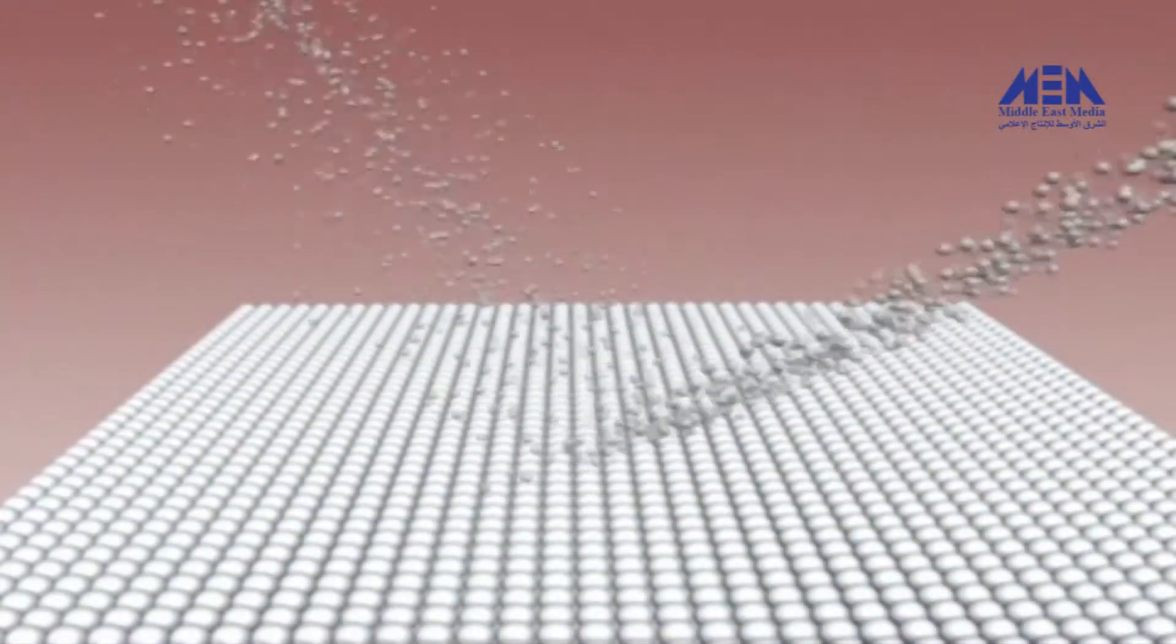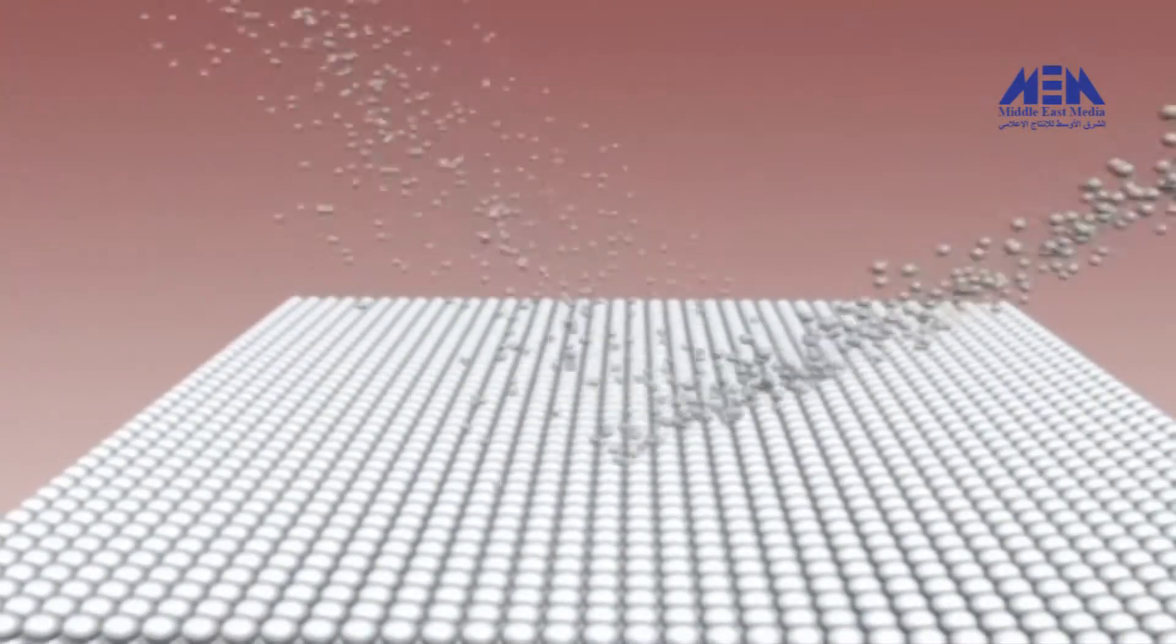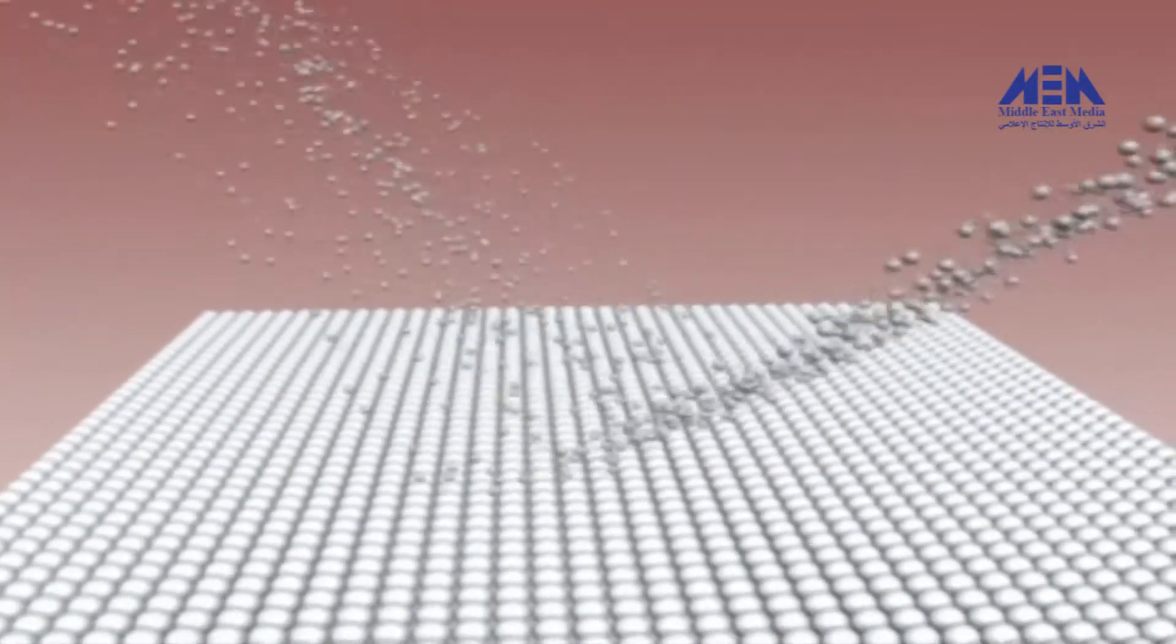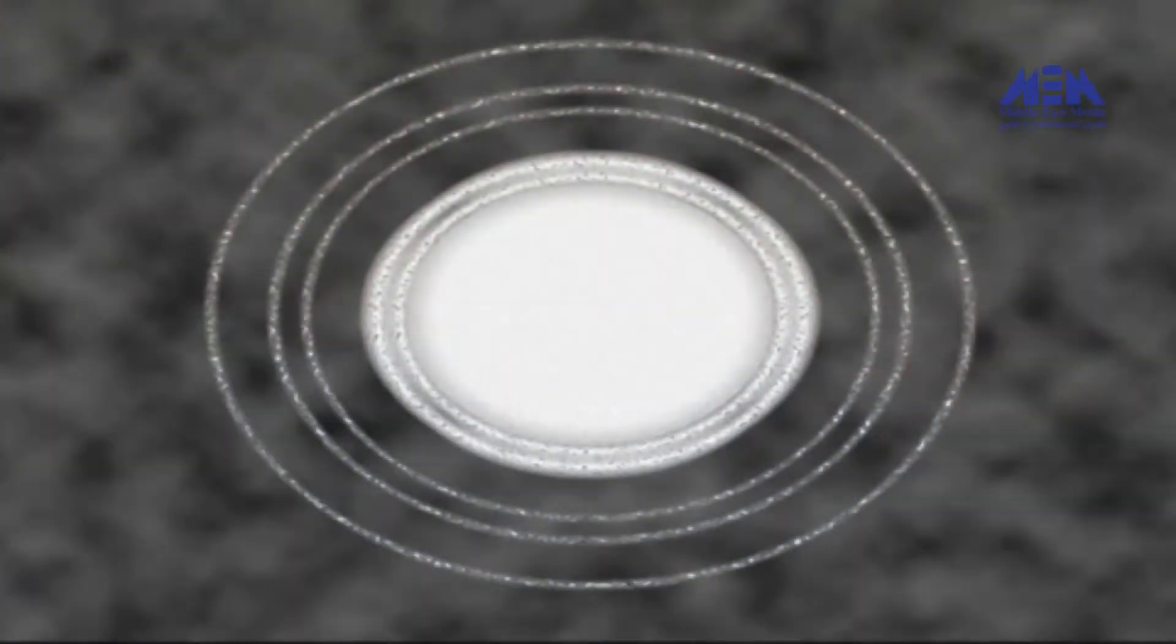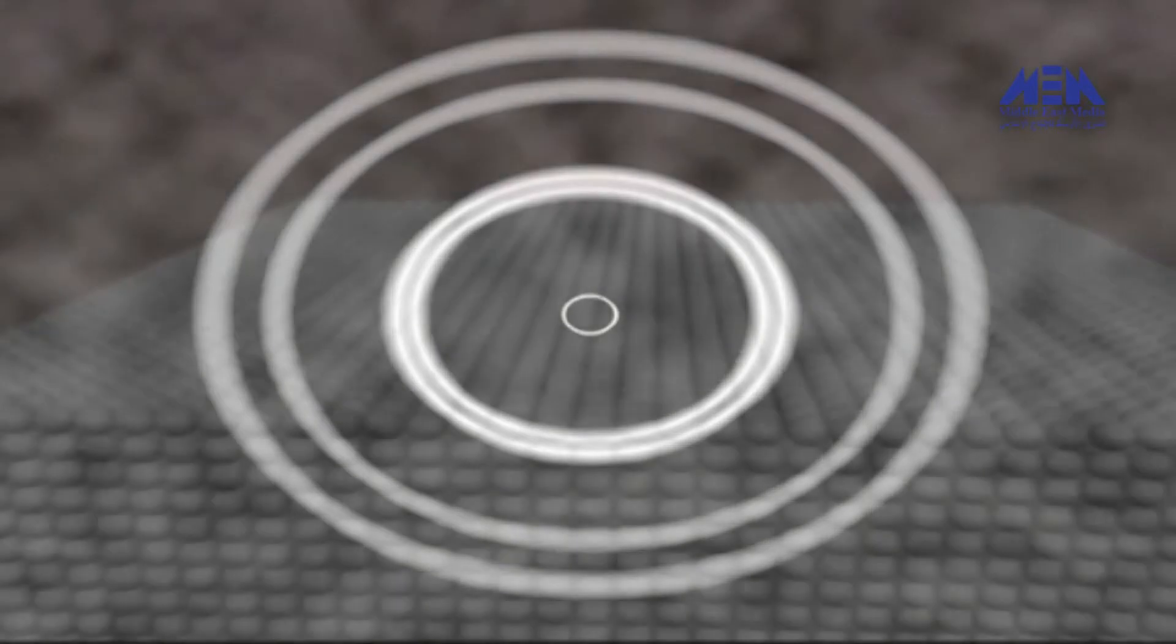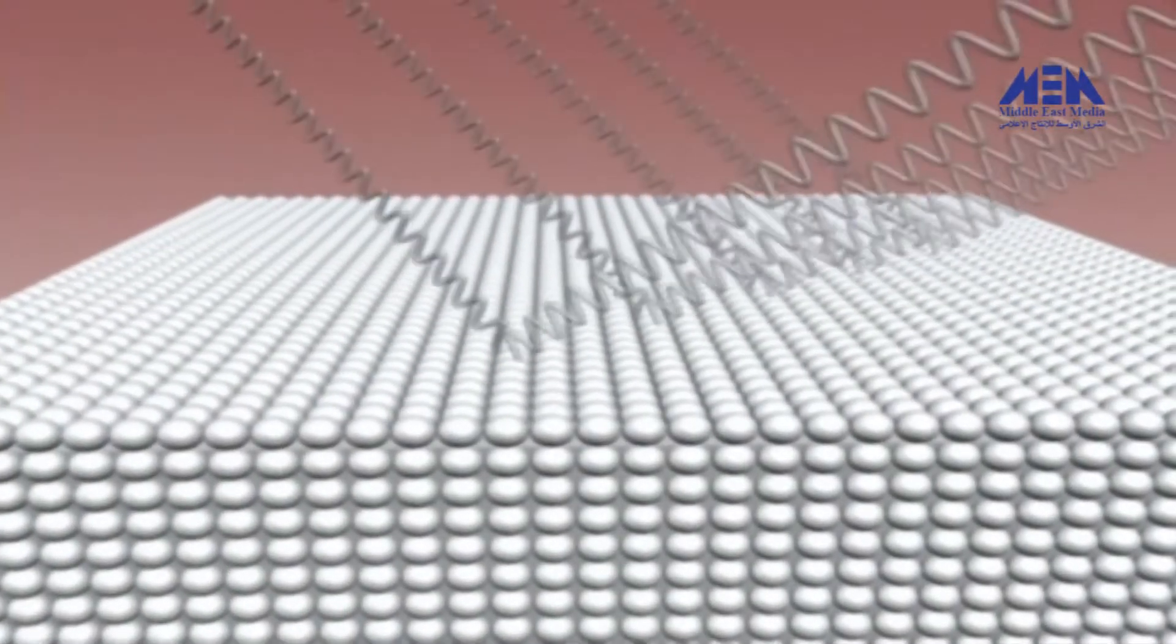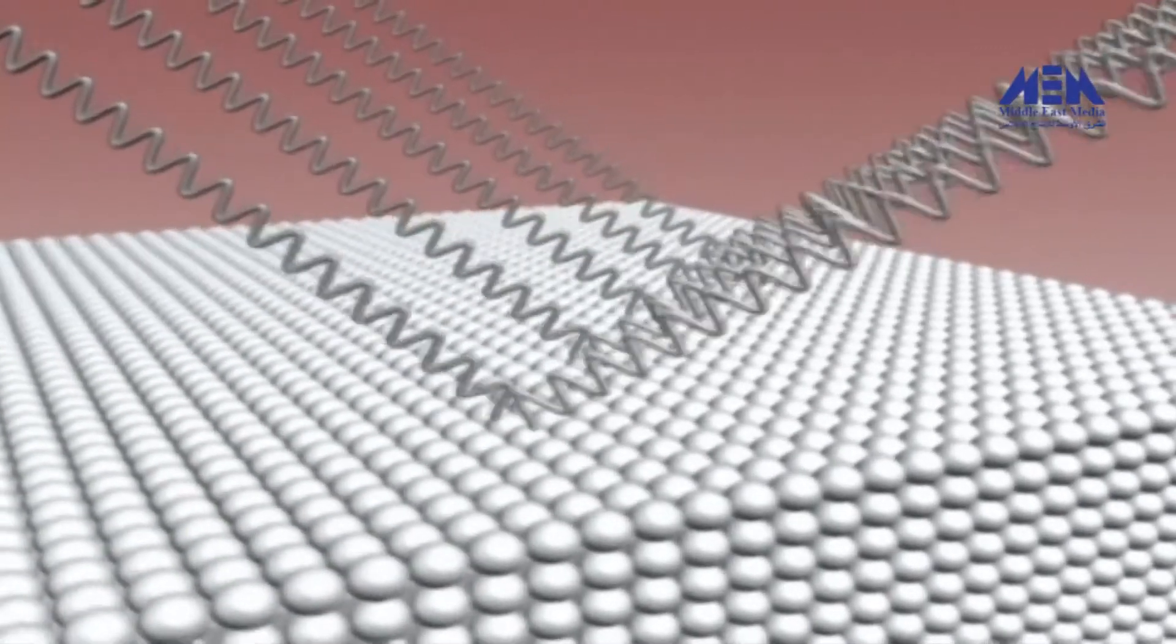But when aluminum foil is bombarded by electrons, the stream of arriving particles interferes with the stream of reflected particles to produce this pattern. A pattern strikingly similar to a pattern created by interfering energy waves, when aluminum is bombarded not by particles, but by X-rays.